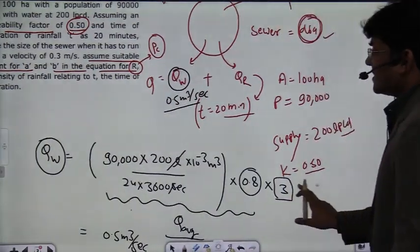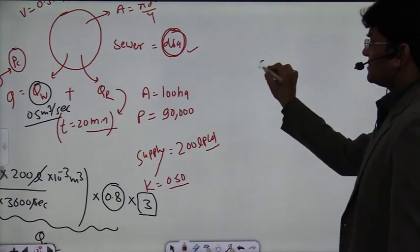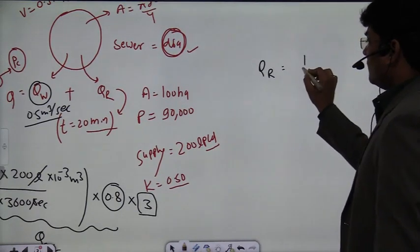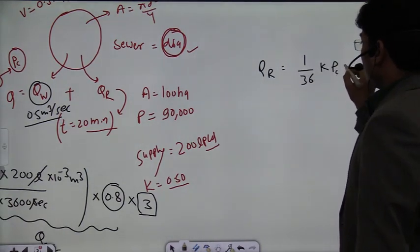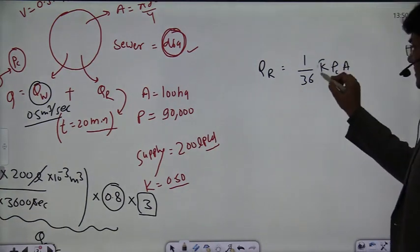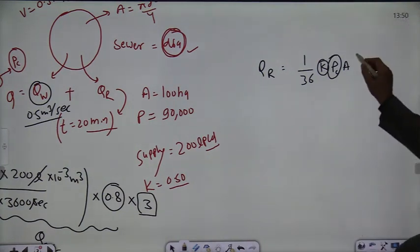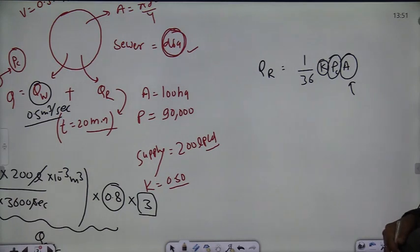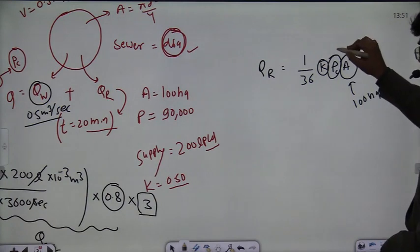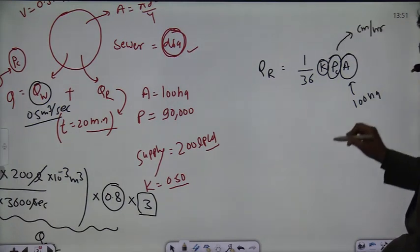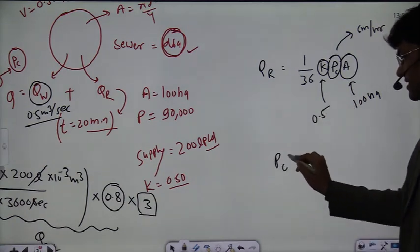Now for rainfall runoff QR, we can use the rational formula. The rational formula states: QR = (1/36) × K × Pc × A, where K is the impermeability factor, Pc is the critical rainfall intensity in cm/hr, and A is the area in hectares. The area is 100 hectares and K is 0.50. All that remains is to find Pc.